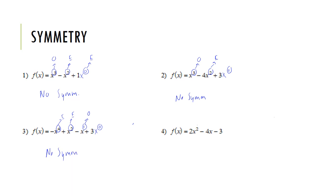For number 4, the exponents are 2, 1, 1, and 0 — that's even, odd, odd, and even — a mix, so there is no symmetry.